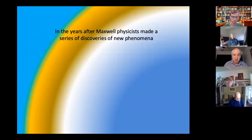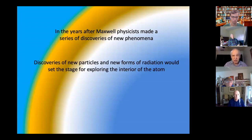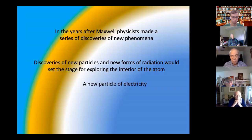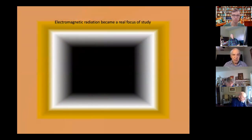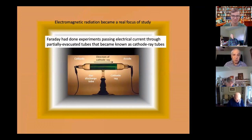In the years after Maxwell, lots of serious discoveries were made of new phenomena — new particles and new forms of radiation. First, it's going to be a new particle of electricity that comes to the fore. Then we're going to encounter X-radiation. And we're also going to cover what John was talking about — radioactivity. Electromagnetic radiation became a real focus of study. Even Faraday had done experiments by passing electrical current through a partially evacuated tube, and these tubes became known as cathode ray tubes. The current would go from the cathode to the anode, negatively charged to positively charged.